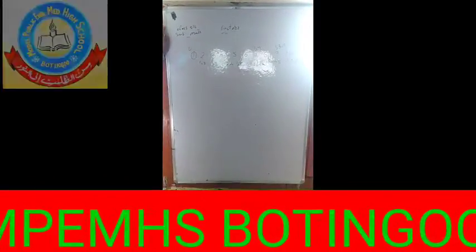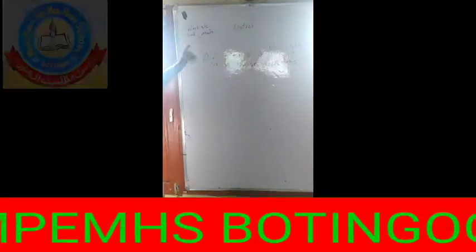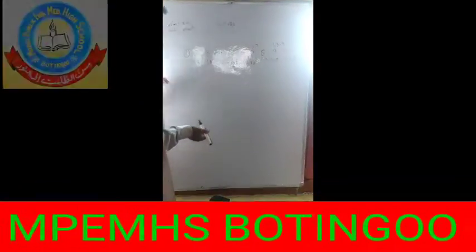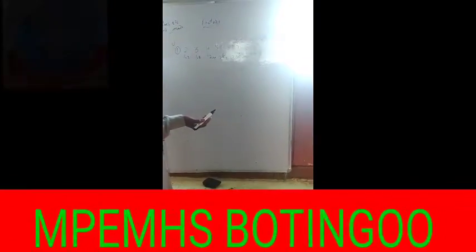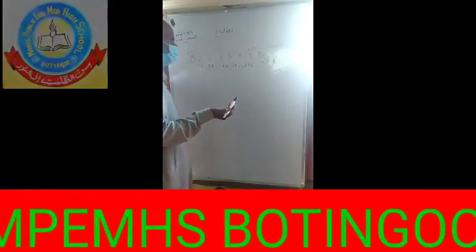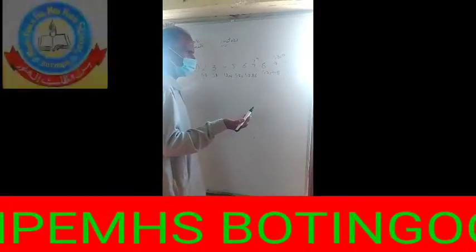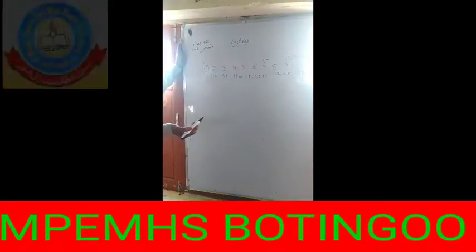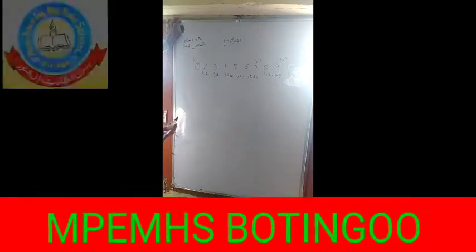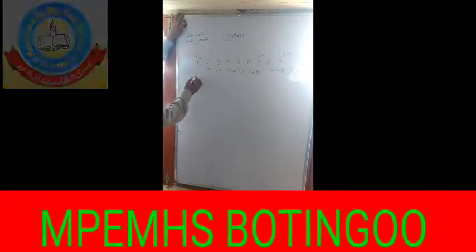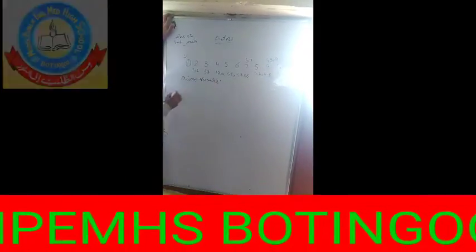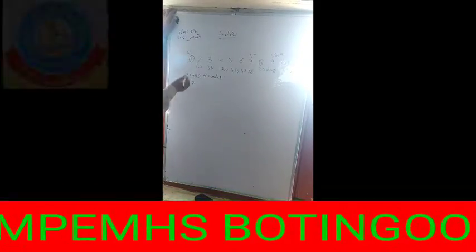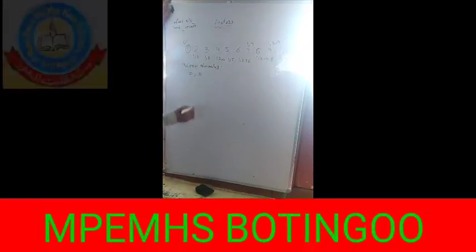Now we observe: two has only two factors, three has only two factors, four has three factors, five has only two factors, six has four factors, seven has only two factors, eight has four factors, nine has three factors, and ten has four factors. We observe that numbers which have only two factors are called prime numbers.